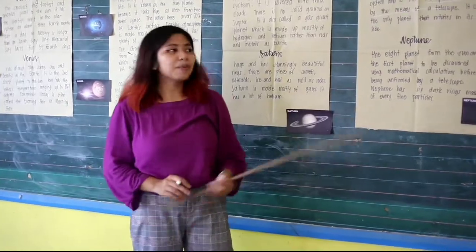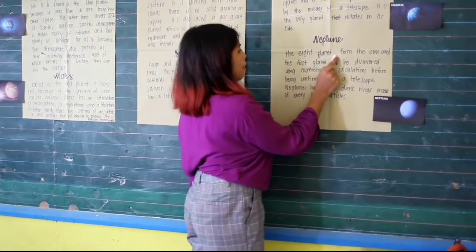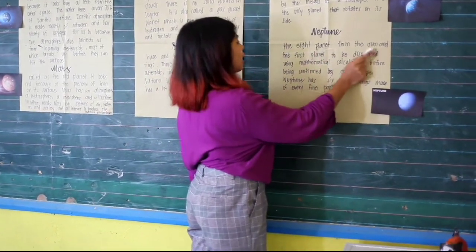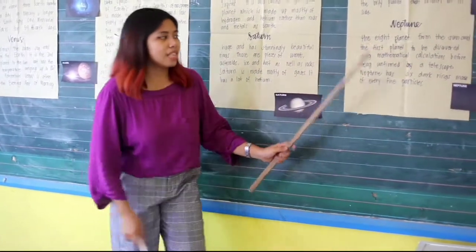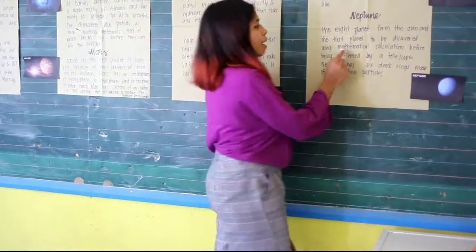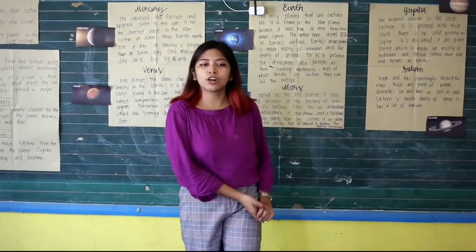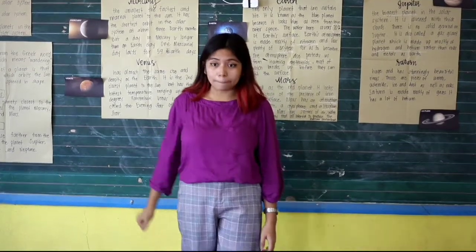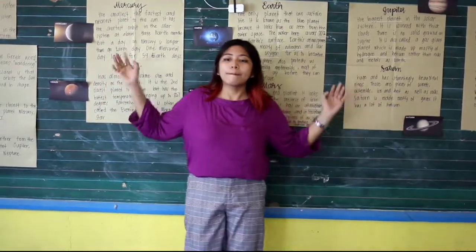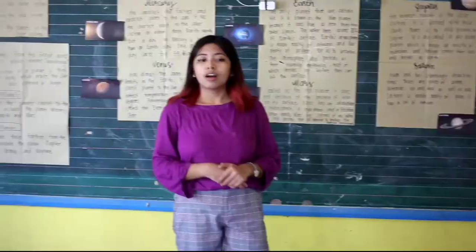Here we are with the last outer planet — the eighth planet from the sun and the first planet to be discovered using a mathematical calculation. Before we end our session, you will be doing a diagram showing the different planets in the solar system.